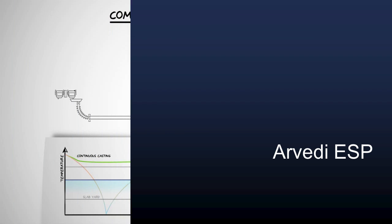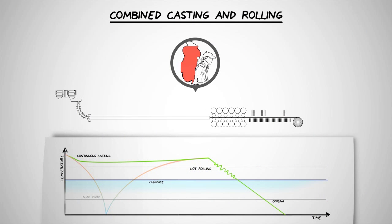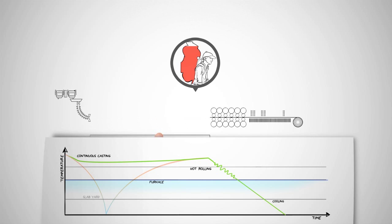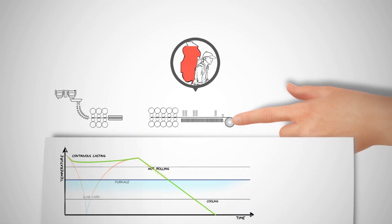The Arvedi ESP process produces hot-strip in a directly linked, continuous and uninterrupted casting and rolling sequence. Energy consumption and the associated costs are reduced by up to 45% compared with conventional casting and rolling facilities. This also means a significant reduction of CO2 emissions.